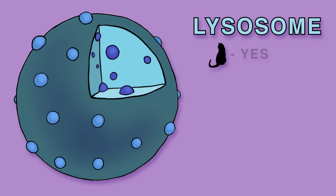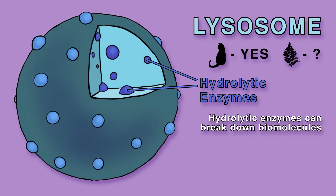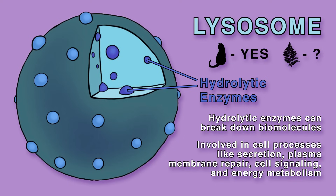Animal cells have clearly defined lysosomes; however, it's still debated whether some plant cells have them. Lysosomes are membrane-bound spherical vesicles containing hydrolytic enzymes that can break down biomolecules. They are involved in cell processes like secretion, plasma membrane repair, cell signaling, and energy metabolism.